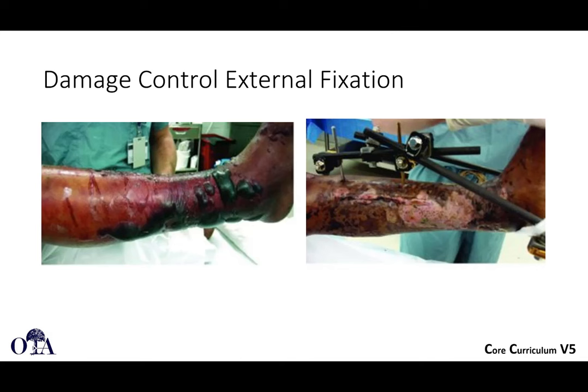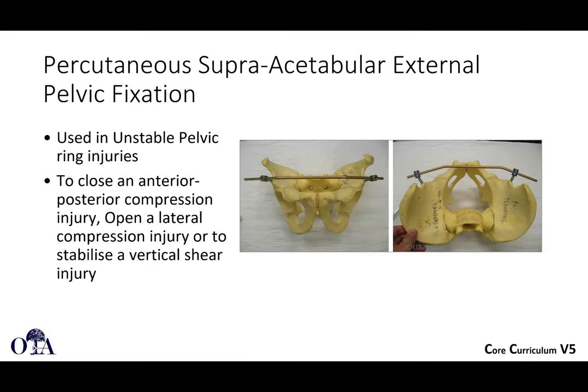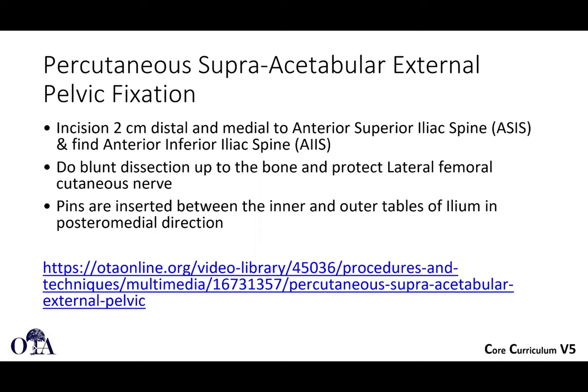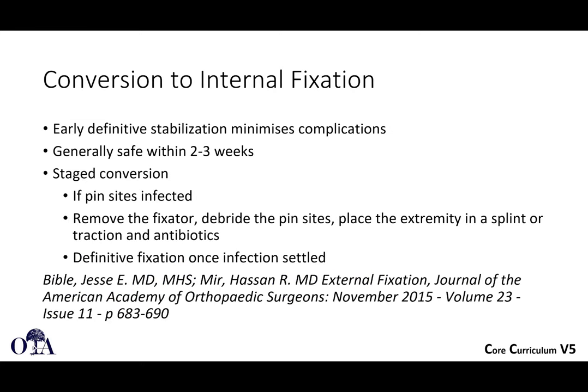Here is an example of a damage control external fixator with substantial fracture blistering visible. External fixators can also be placed percutaneously for pelvic fixation — shown here is an external fixator used to stabilize the anterior ring in an unstable pelvic ring injury. A technique video for this is available at otaonline.org.